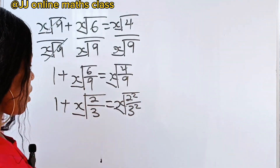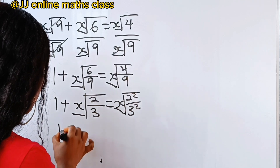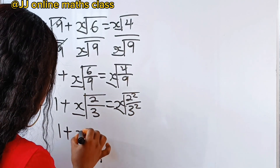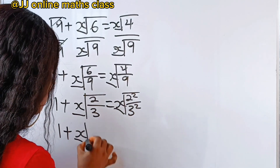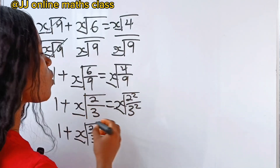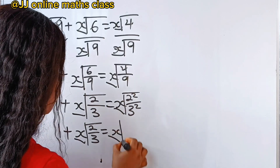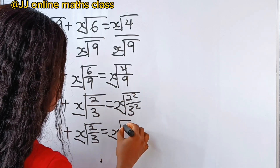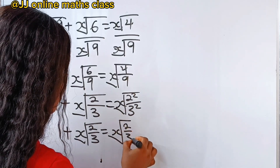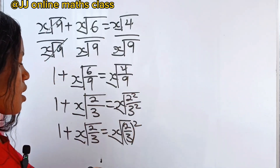Alright, so we have 1 plus x-root of 2 over 3, is equal to x-root of 2 over 3, squared.